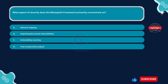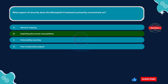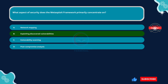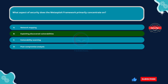The correct answer is Option B: Exploiting discovered vulnerabilities. The primary focus of the Metasploit framework is on exploiting discovered vulnerabilities. It provides a platform for security researchers, penetration testers, and attackers to develop, test, and execute exploits against systems with known vulnerabilities. Metasploit includes a vast database of exploits and payloads that can be used to compromise systems.